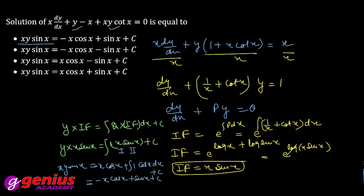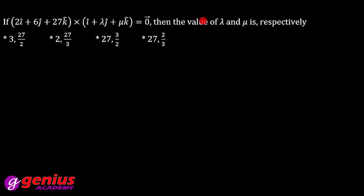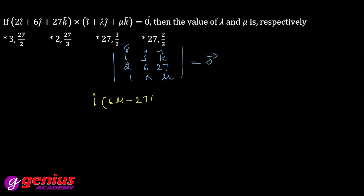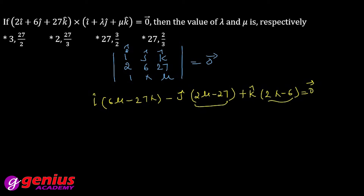Next: find lambda and mu values. Setting up the determinant with i cap, j cap, k cap; first row 2, 6, 27; second row 1, 1, lambda, mu equal to zero vector. Expanding the determinant: i cap times (6mu minus 27 lambda) minus j cap times (2mu minus 27) plus k cap times (2 lambda minus 6) equals zero. So 2mu minus 27 equals 0 and 2 lambda minus 6 equals 0, giving lambda equals 3 and mu equals 27/2.